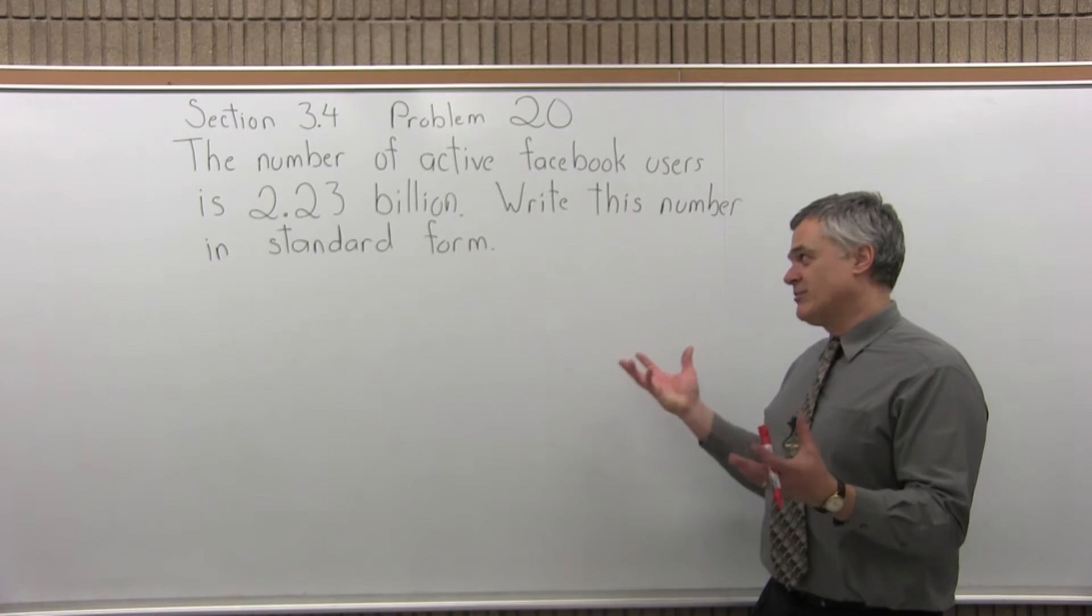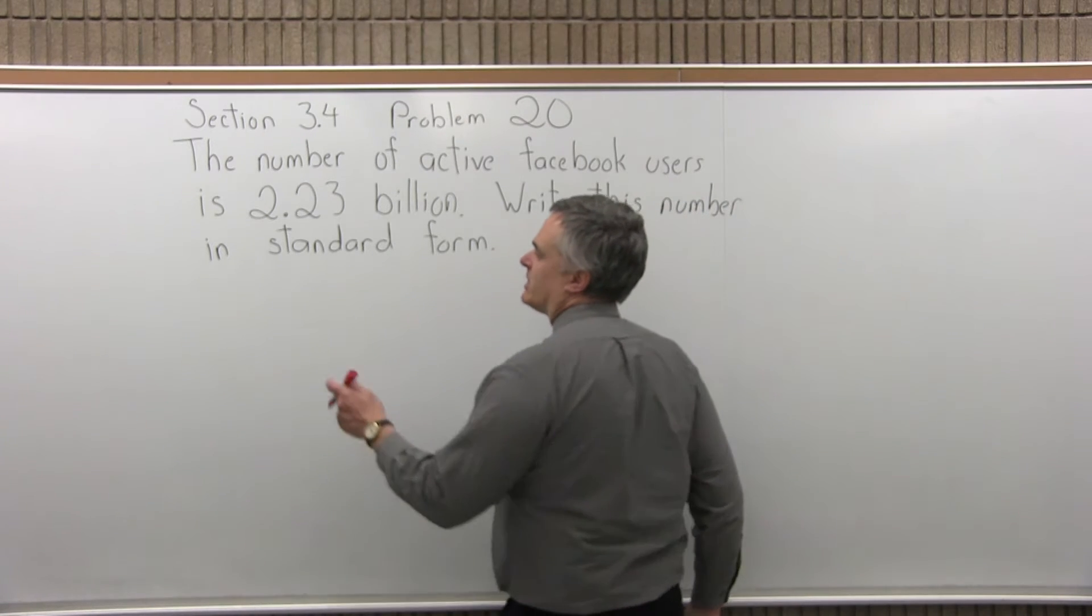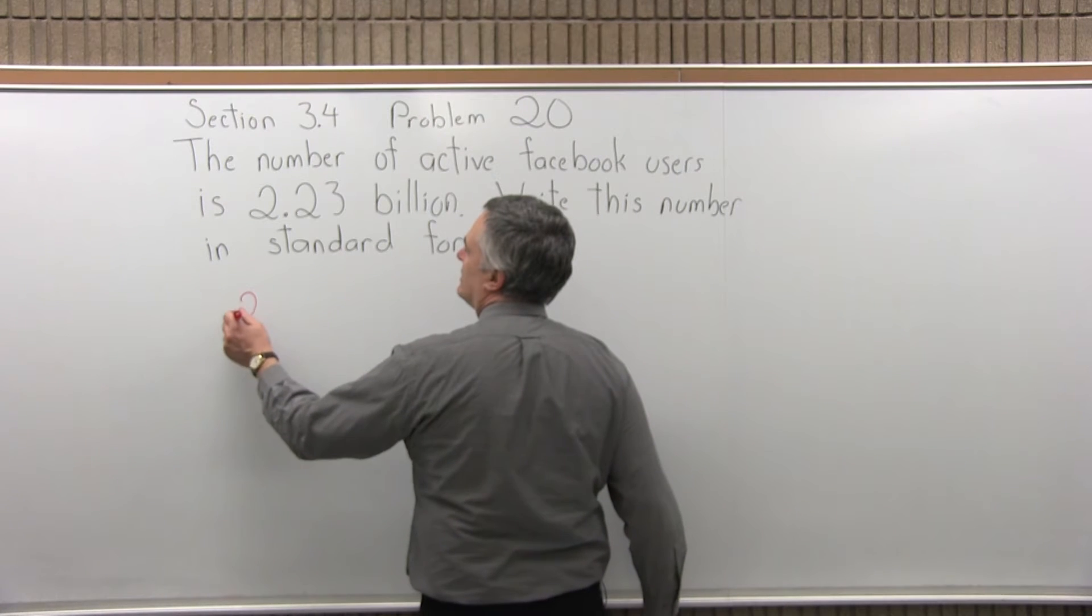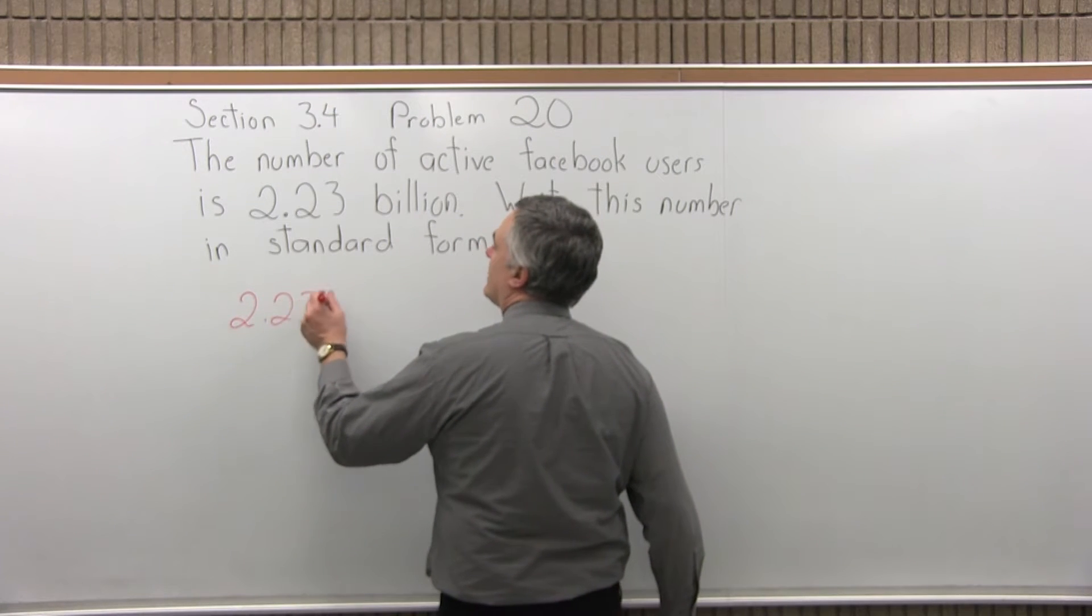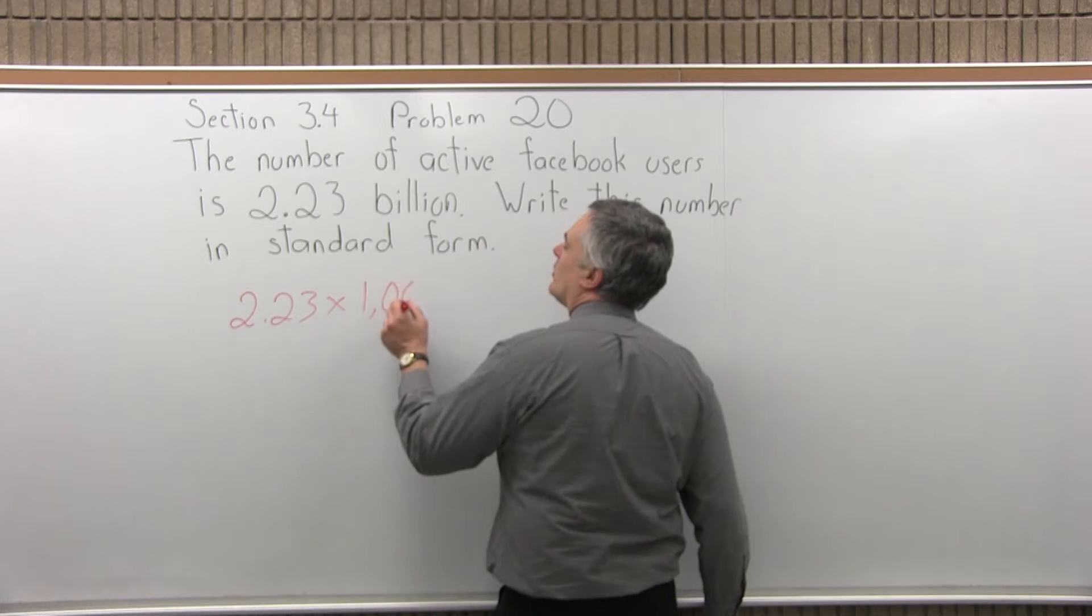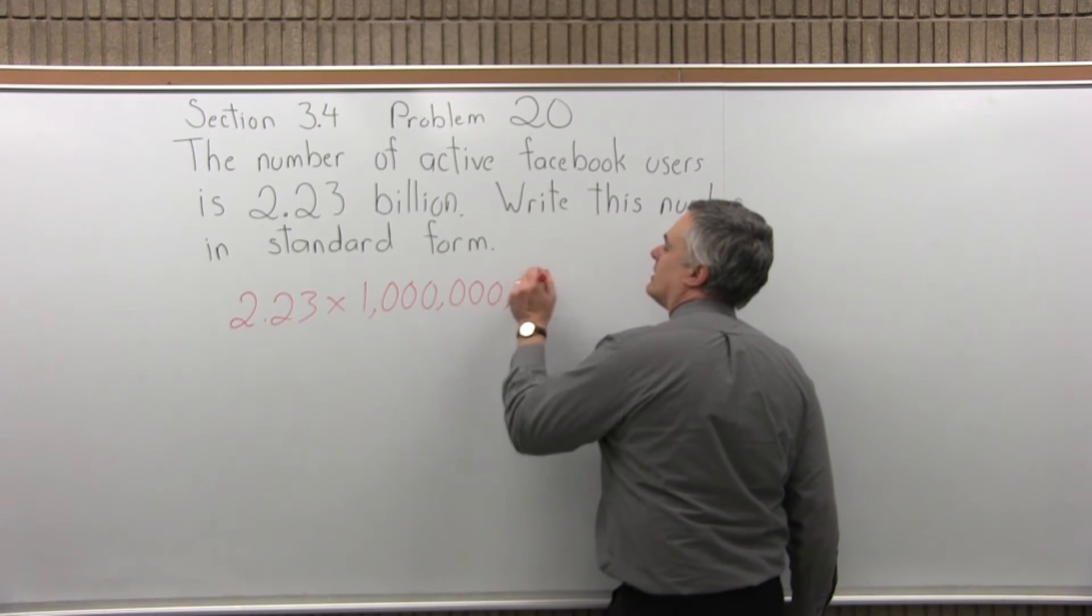The way it's written now, it's half in numbers, half in words. So write it just as a number. So 2.23 billion would start off with 2.23 times a billion, and a billion is a one with nine zeros after it.